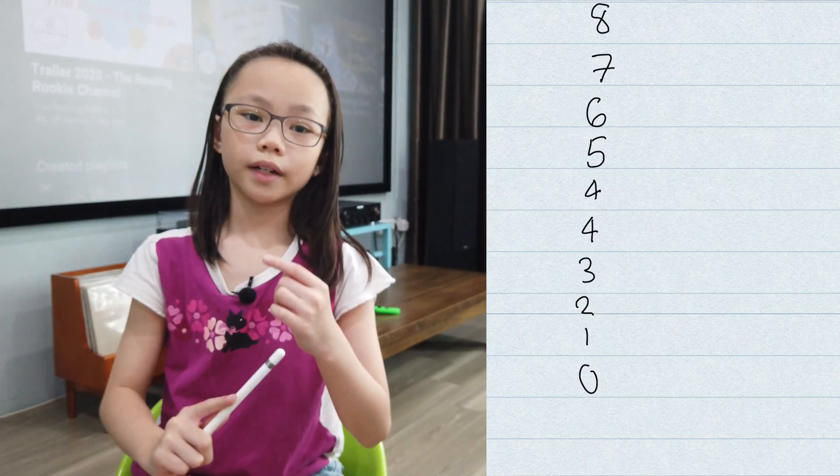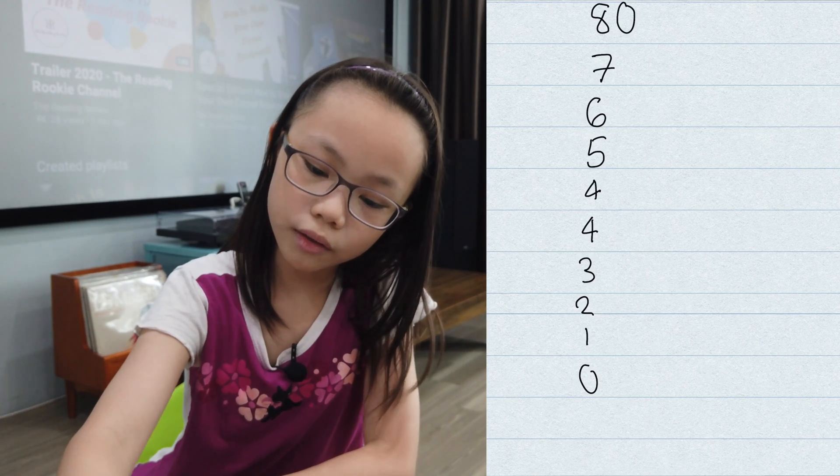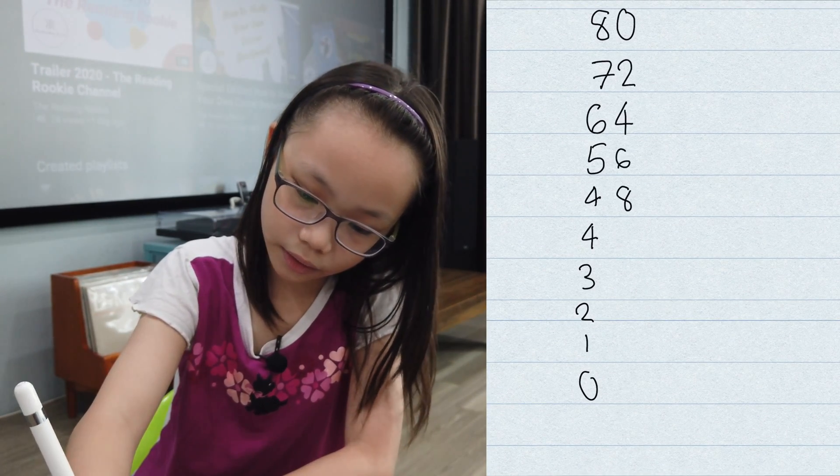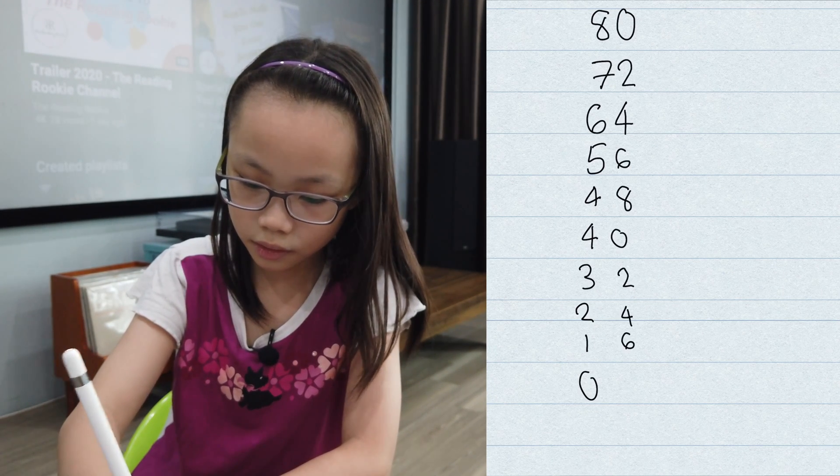Now, we need to do it in reverse, but we're going to use the 2 times tables: 0, 2, 4, 6, 8, 0, 2, 4, 6, 8.